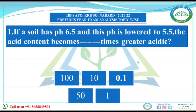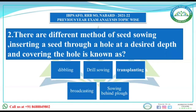Next, there are different methods of seed sowing. Inserting a seed through a hole at a desired depth and covering the hole is known as dibbling, drill sowing, transplanting, broadcasting, or sowing behind the plug. First we will talk about dibbling — in dibbling we insert a seed through a hole at the desired depth and then cover the hole. This is generally practiced in plain regions.